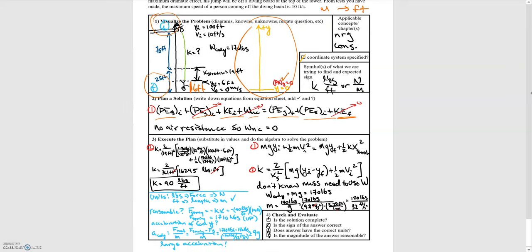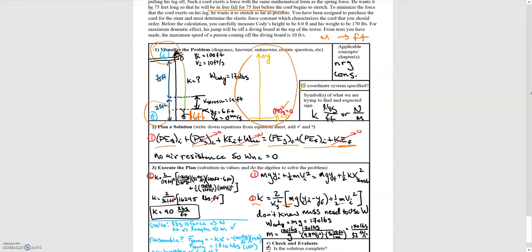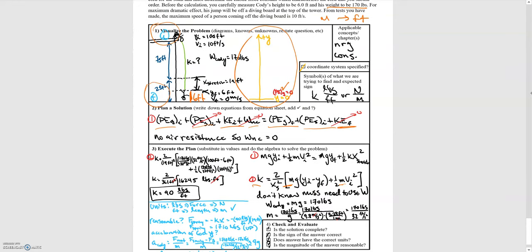So I started with the energy equation, separated everything out, and solve for the spring constant because that's ultimately what we're looking for. We don't know the mass at this point. We're going to need it for the gravitational potential energy and the kinetic energy. And so this is where the unit conversions come into play. We're given the weight. Cody weighs 170 pounds. So we can solve for mass. And this is where the conversion came in, converting G to 32 feet per second squared. Substituting all of that in, you find K is equal to 90 pounds per foot.